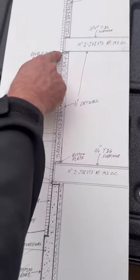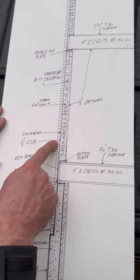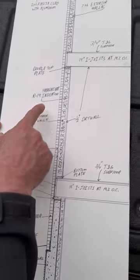Two by six walls that are nine foot tall on the first floor with half inch OSB and house wrap on the outside. R19 fiberglass insulation.